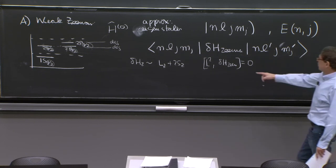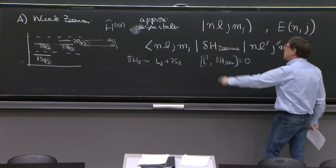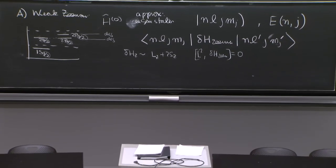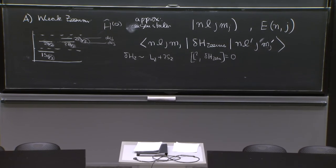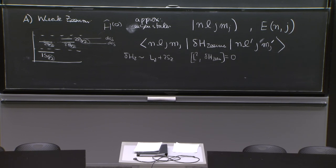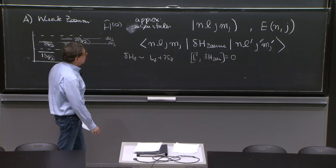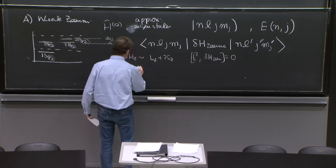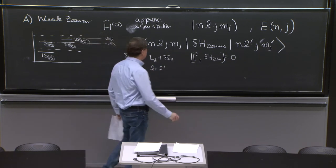And therefore, L squared commutes with L Zeeman, which means that when L is different from L prime, this matrix element has to vanish. This is our remark from perturbation theory long, long ago. So you have another operator for which the states have different eigenvalues commutes with your perturbation. The matrix element of the perturbation must vanish between those states. So we don't have eigenstates like that. And when L is equal to L prime already, so we focus on L equals to L prime. So we only need to worry within multiplets.